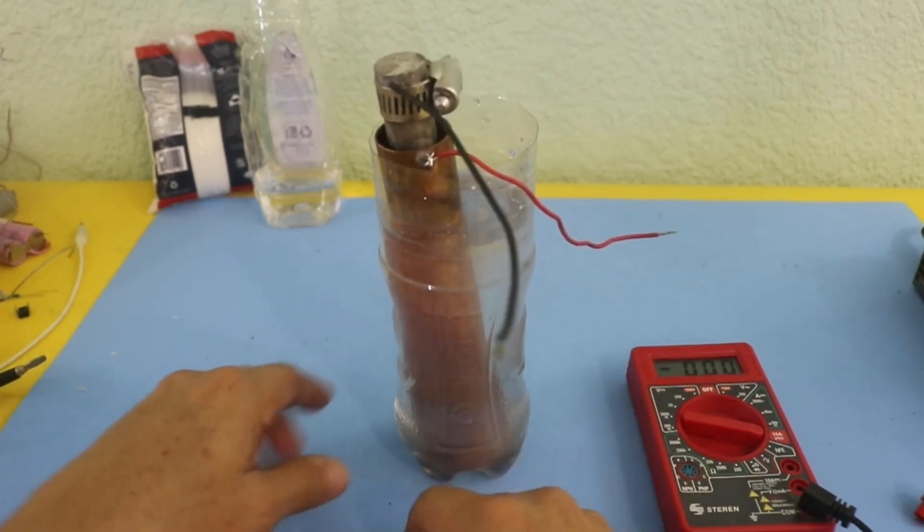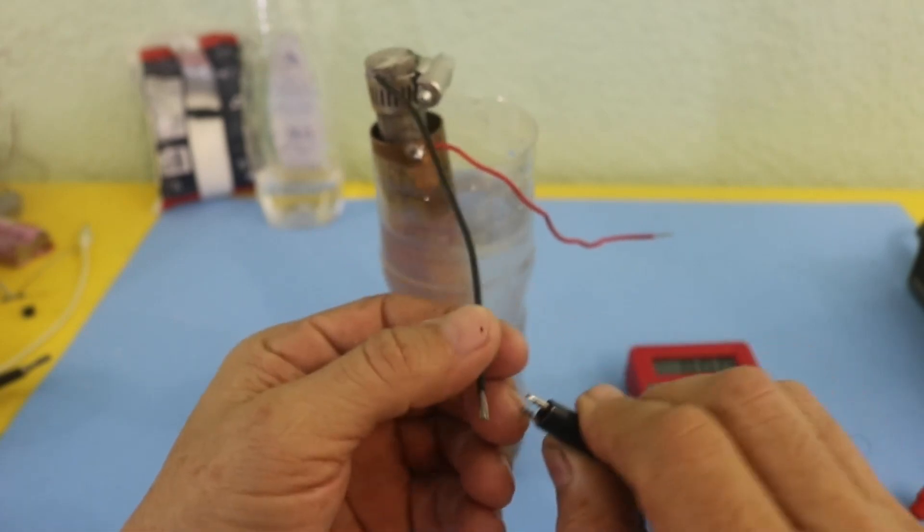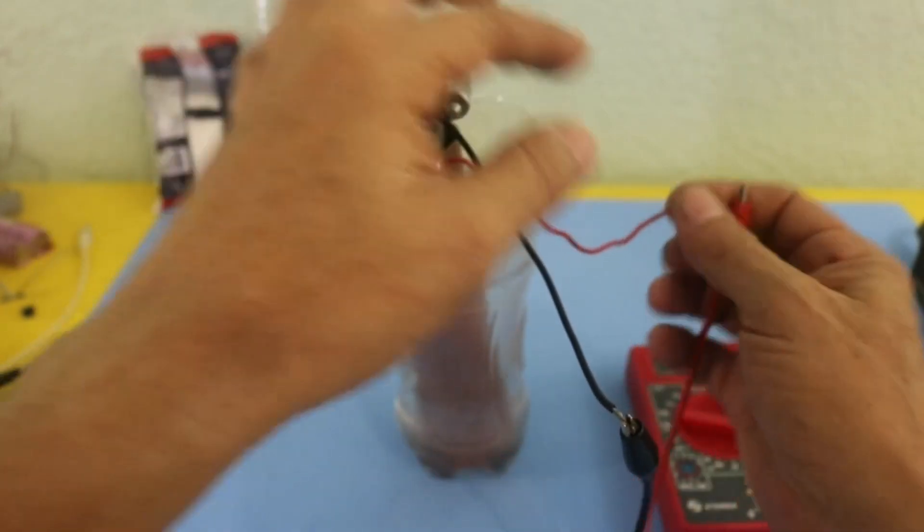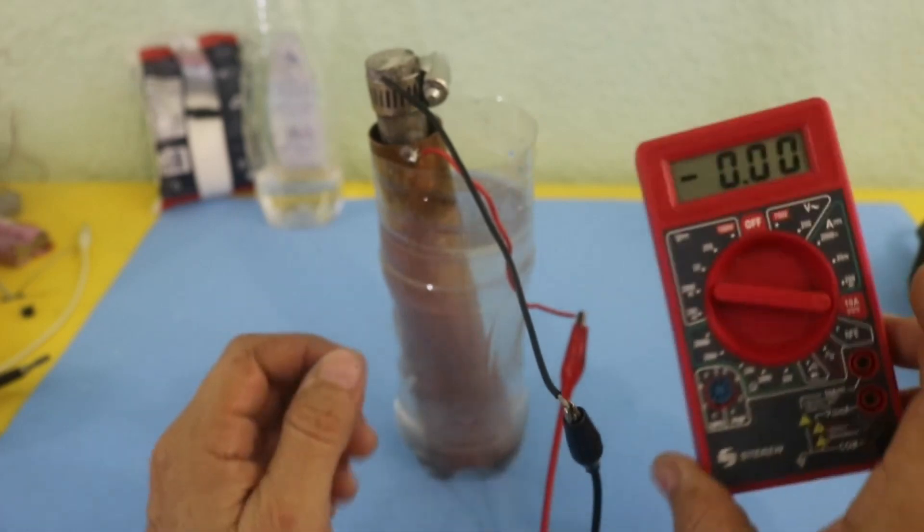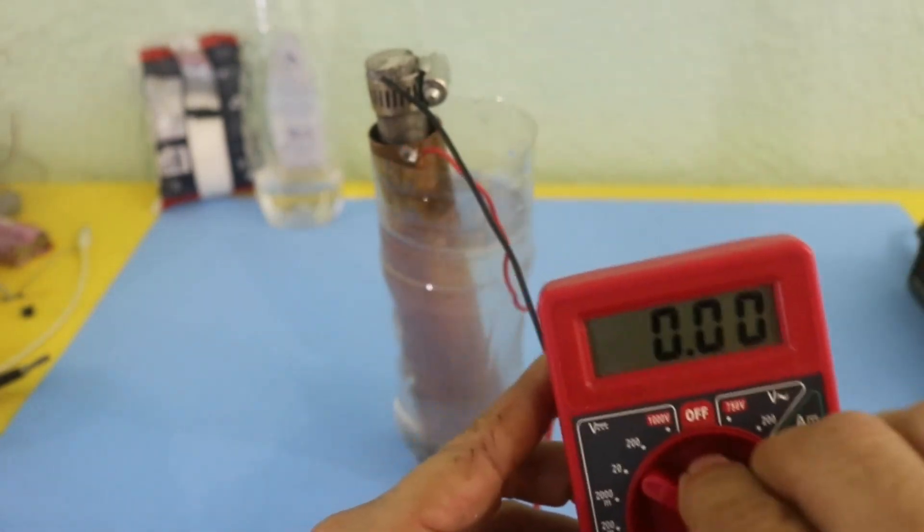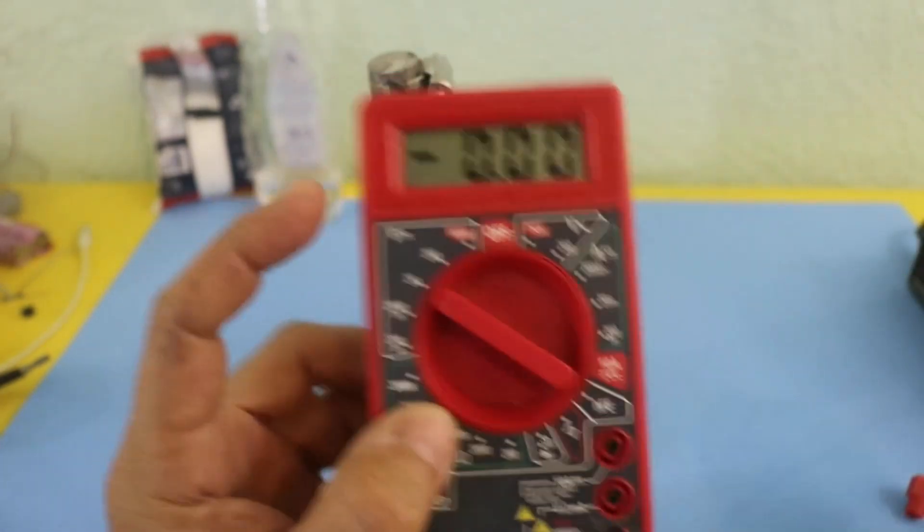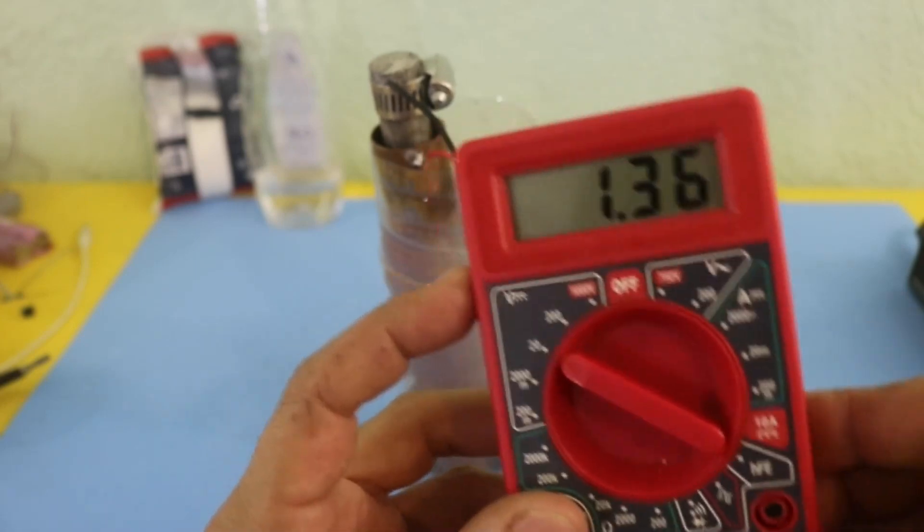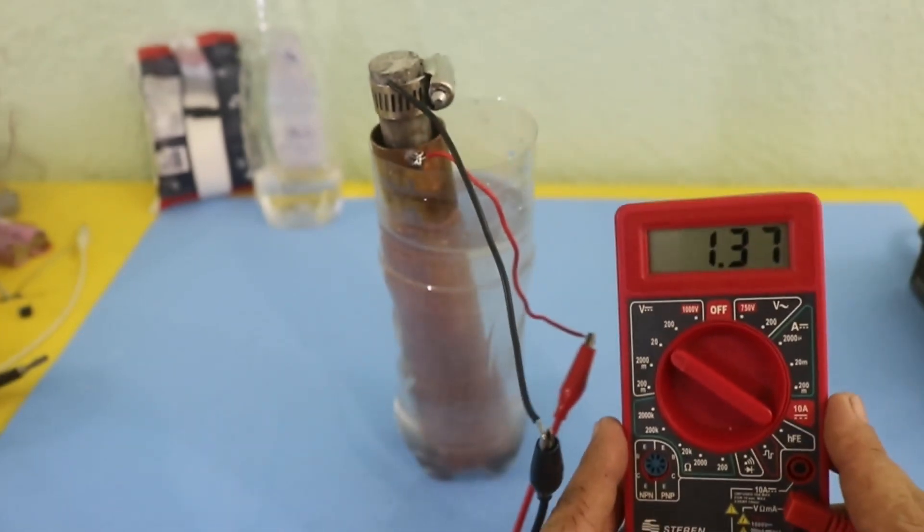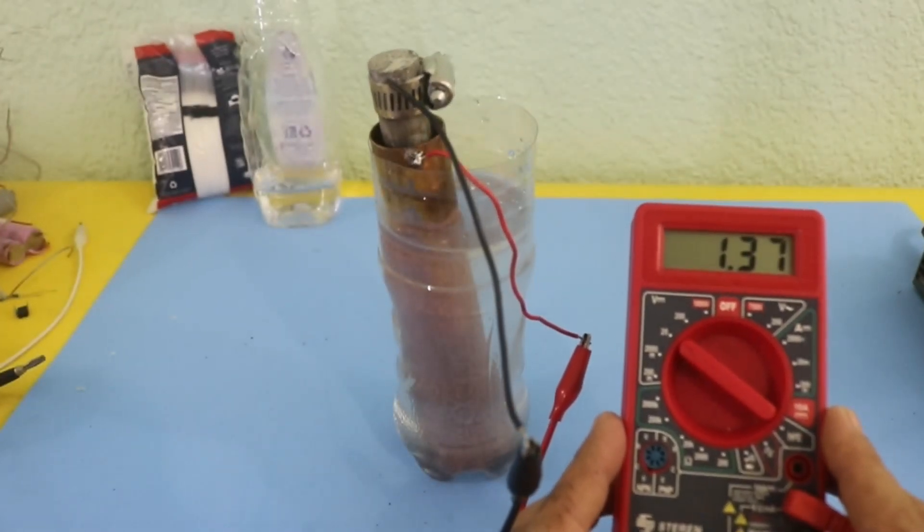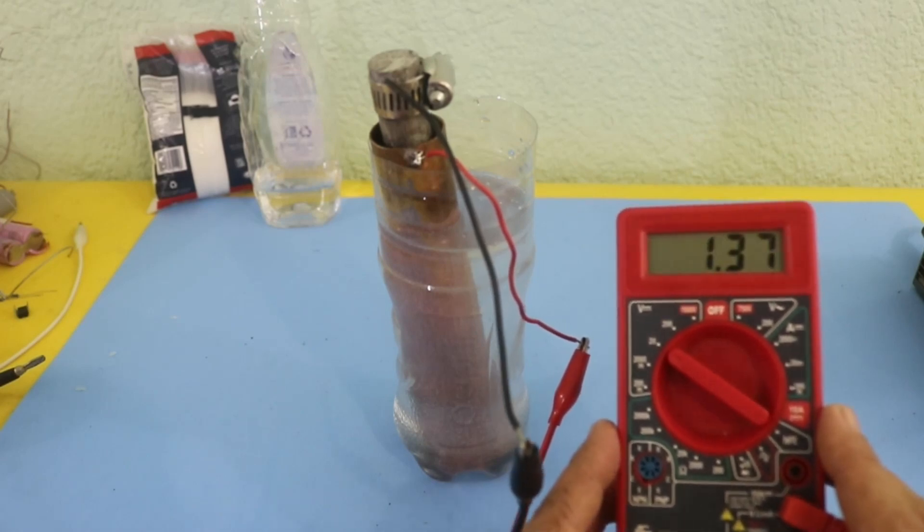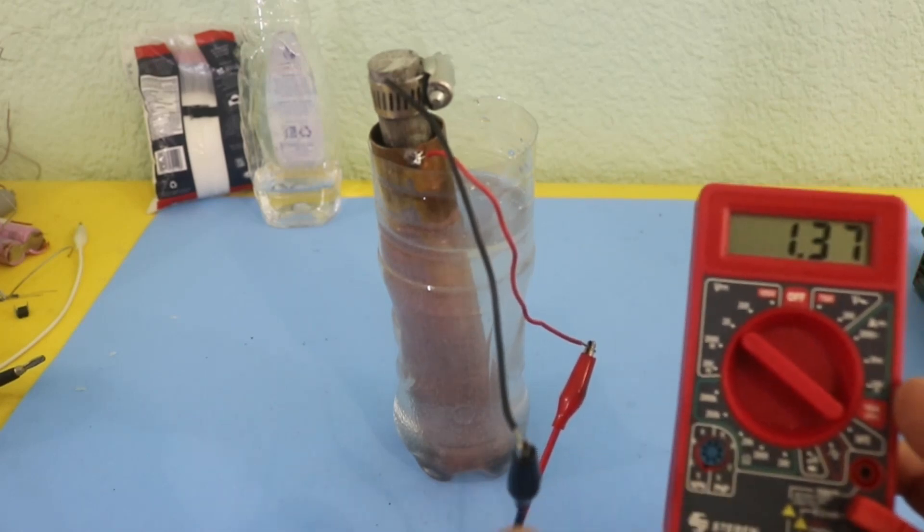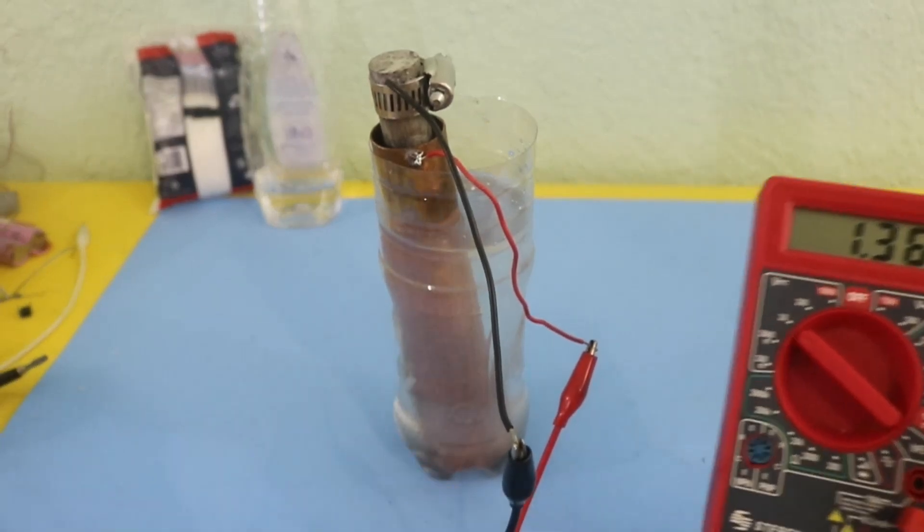So let's test the voltage using our multimeter and we can see that we have 1.37 volts, a little bit more than with the other electrolyte.